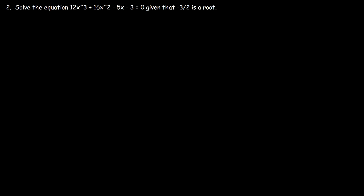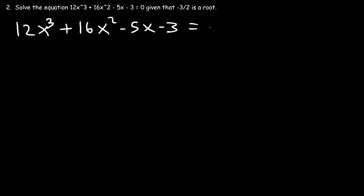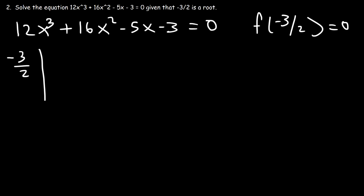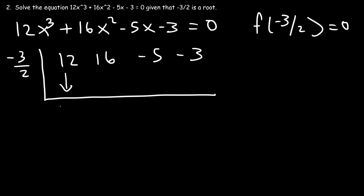For problem 2, solve 12x³ plus 16x² minus 5x minus 3 = 0, given that negative 3/2 is a root. That means negative 3/2 is a zero of the function. Let's divide using synthetic division, with coefficients 12, 16, negative 5, and negative 3, and c = negative 3/2.